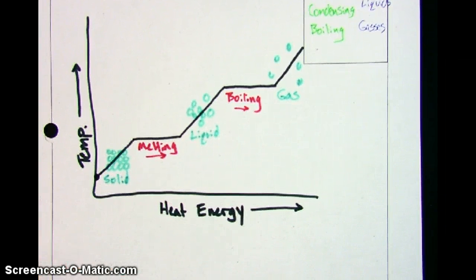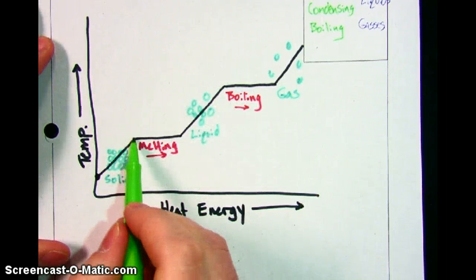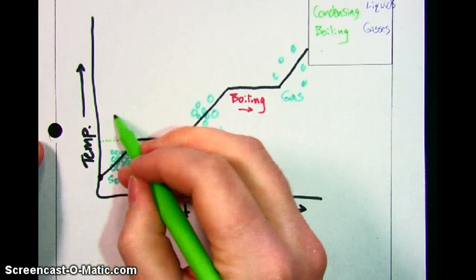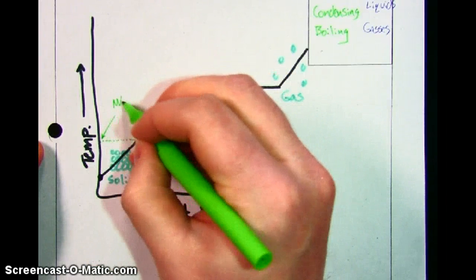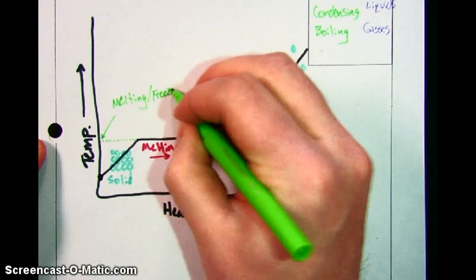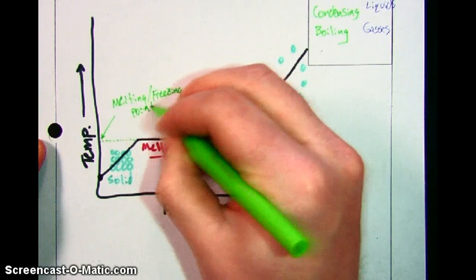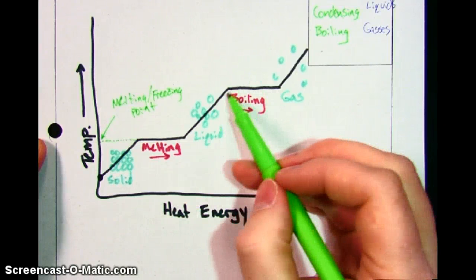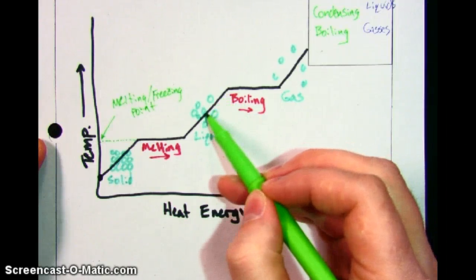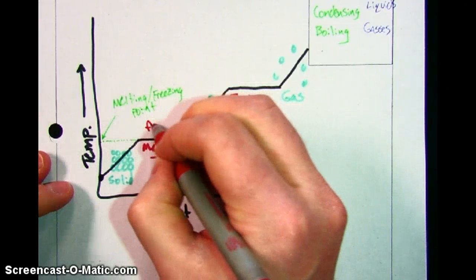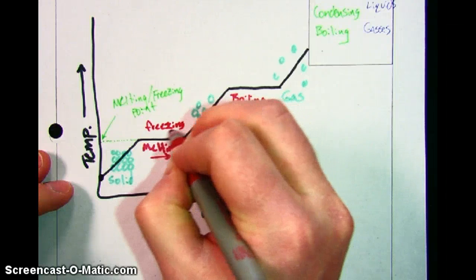Now there are a few key points on here that need to be made. Here's the first. If you follow this spot over to the temperature side, and if this had a scale on it, this temperature right there is the melting point slash freezing point. Because if you think about it, if I were to be removing energy and moving this way on the graph instead, and I started with a liquid when I was taking away energy, it would get colder and colder until it hit this point. And if we're going back the opposite direction, freezing would be going that way.